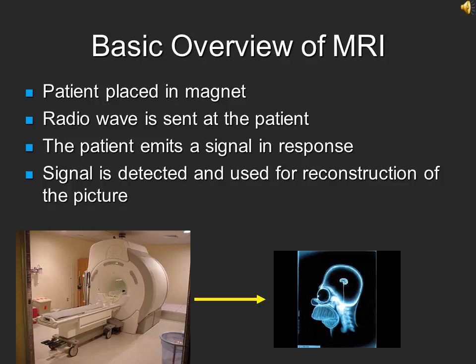So how does MRI actually work? To get the final image that we see, the patient must first be placed in a large magnet. A radio wave is then sent at the patient, who emits a signal in response. This signal is detected and used for reconstruction via various mathematical equations and transformations to finally produce an image on the screen.